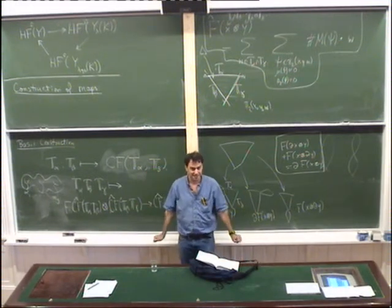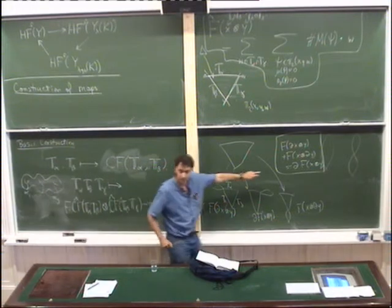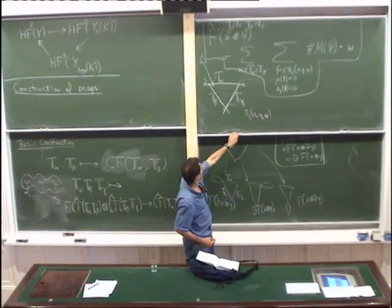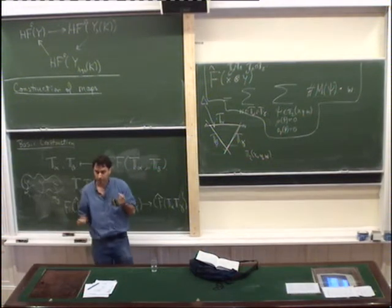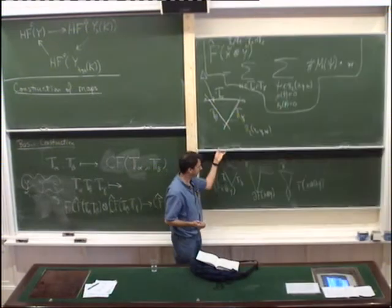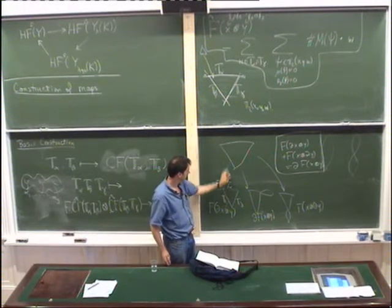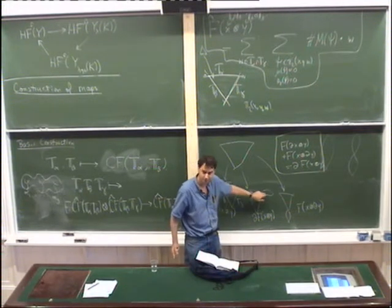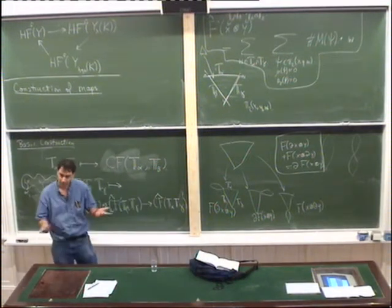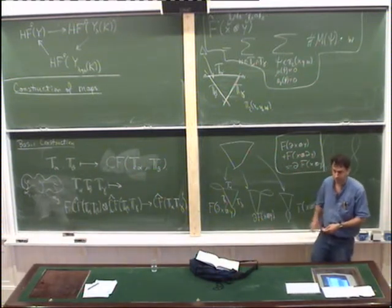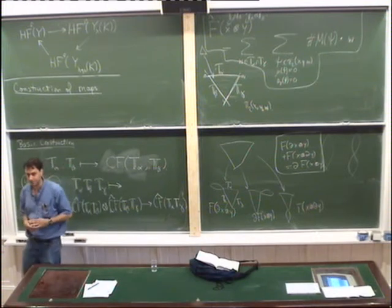Is that clear? You look at families of holomorphic triangles with formal dimension one, and say this moduli space has finitely many ends. The types of ends are when a holomorphic disk splits off at each of the three vertices. Since the number of ends of a one-manifold with finitely many ends is 0 mod 2, the signed count equals zero. That's the equation that says f is a chain map — it's the same argument as d-squared equals zero.